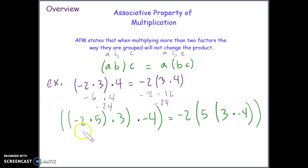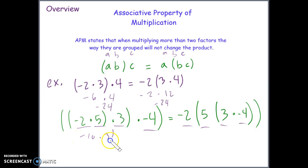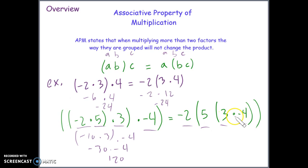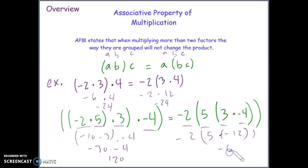The same is true with this example. We've got four factors in the same exact order: negative 2, 5, 3, and negative 4. The order we perform the operations is different, but all are being multiplied. We get negative 10 times 3 times negative 4; negative 10 times 3 is negative 30, times negative 4 is positive 120. Over here, multiplying 3 and negative 4 first gives negative 12, times 5 is negative 60, times negative 2 is positive 120.